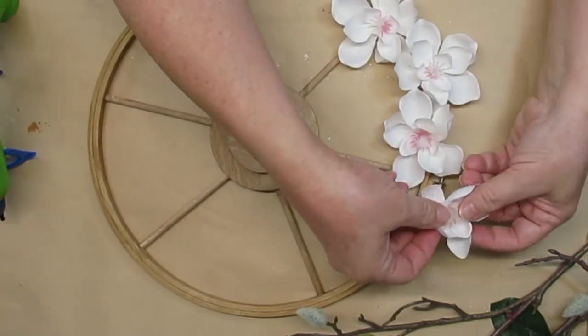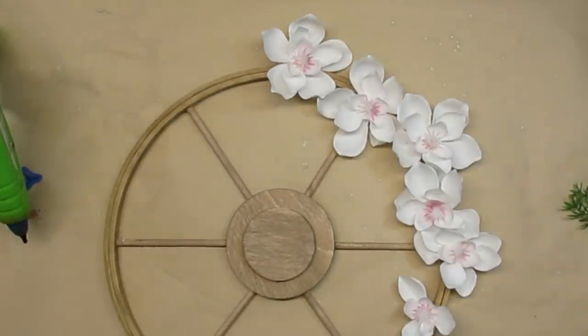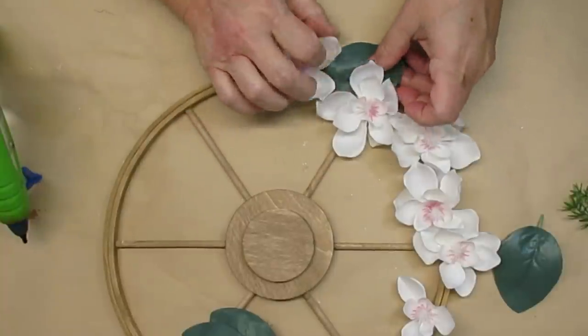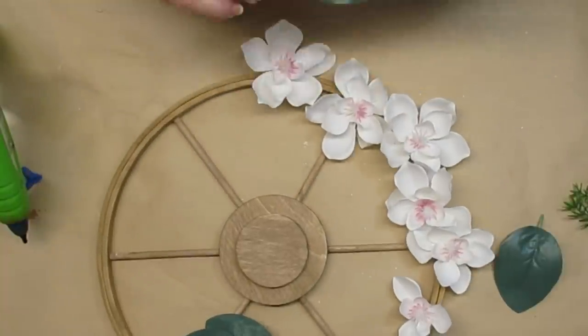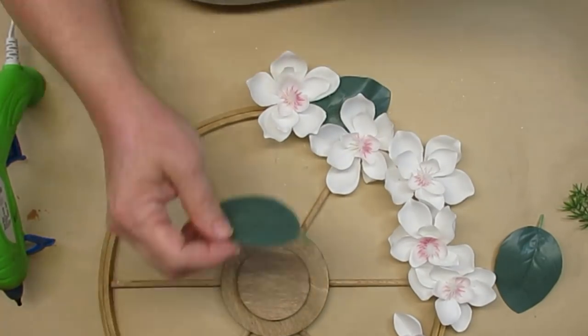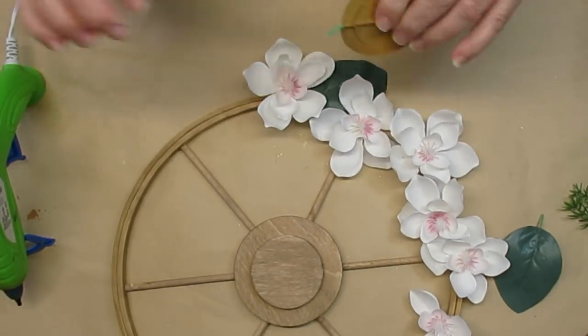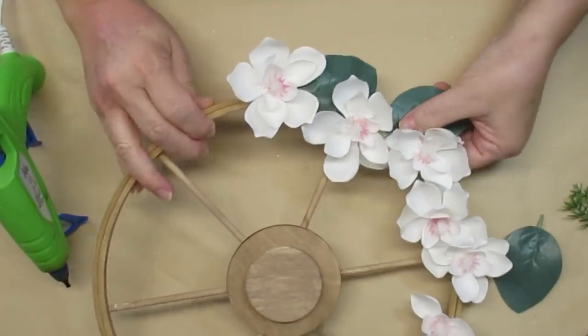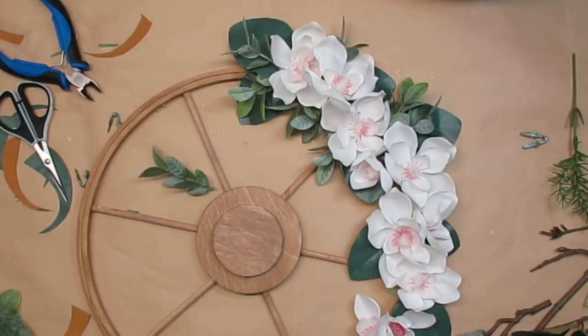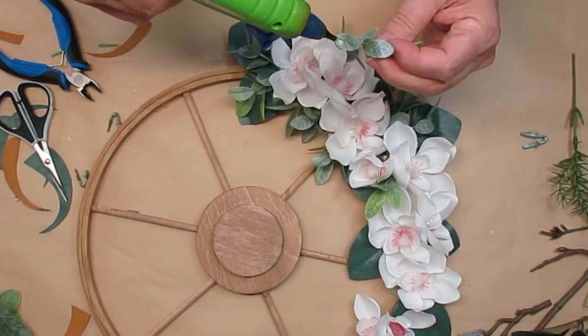I love these magnolias. I do get these from Michael's but I always make sure to get them at their 40% off or their coupon price. You can see here the leaves that are sitting on the side have a little bit of a shine so they do look like magnolia leaves. I'm going to continue adding some leaves and some additional other greenery, a few other blossoms, and then this project is complete.